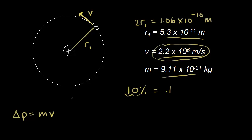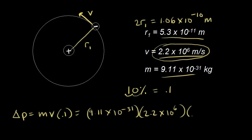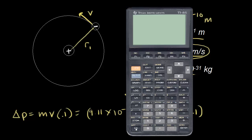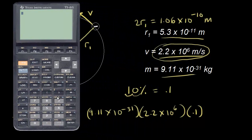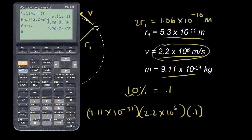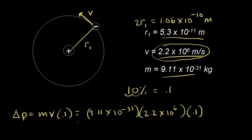With a 10% uncertainty in velocity, we multiply the momentum by 0.1. So we take the mass of the electron — 9.11 times 10 to the negative 31 kilograms — times the velocity, 2.2 times 10 to the 6 meters per second, times 0.1. This gives us an uncertainty in the momentum of 2.0 times 10 to the negative 25 kilogram meters per second.